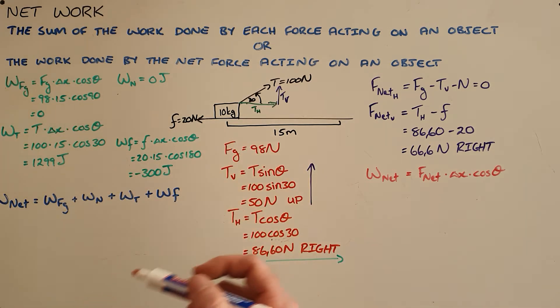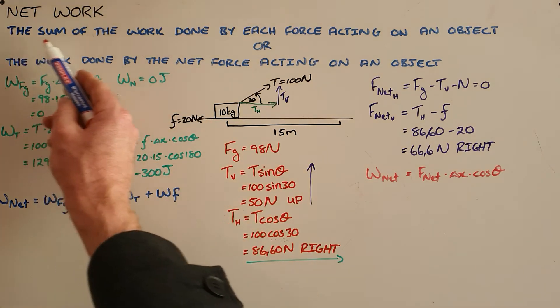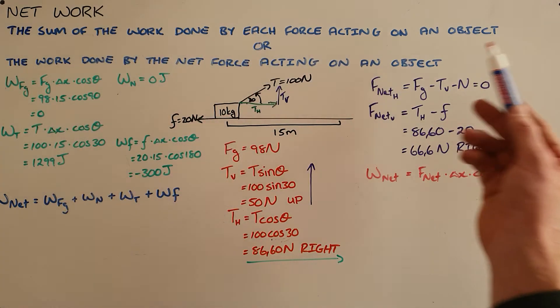The first way in which we can calculate the net work done on this object is we can take the sum of the work done by each force acting on the object.